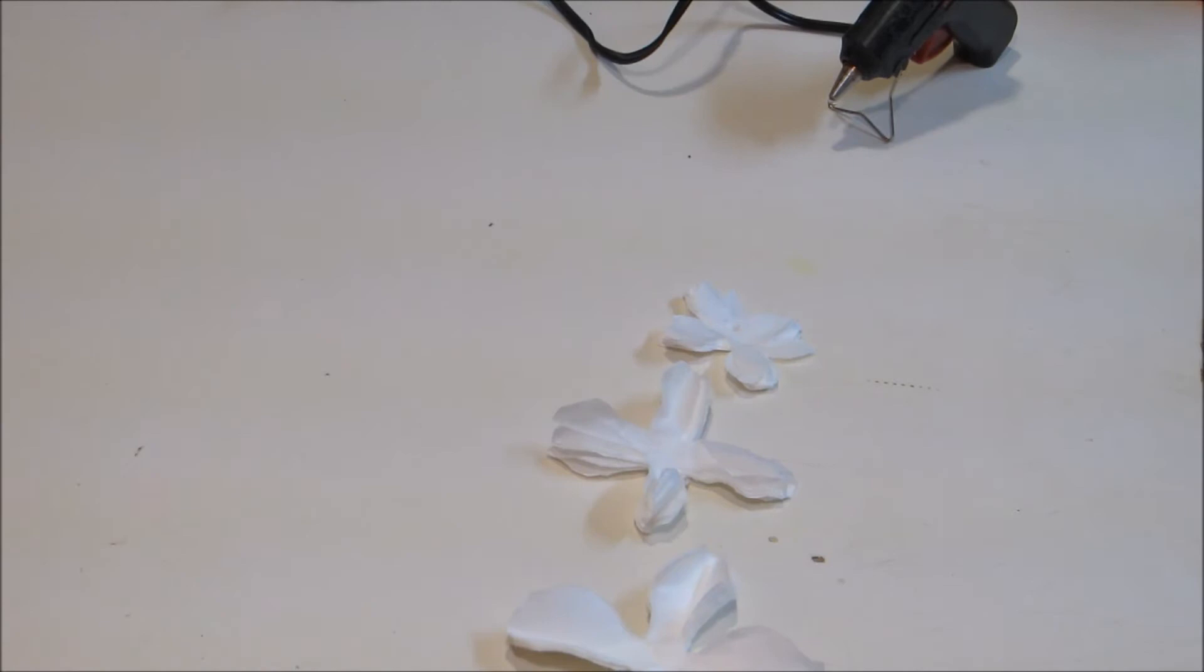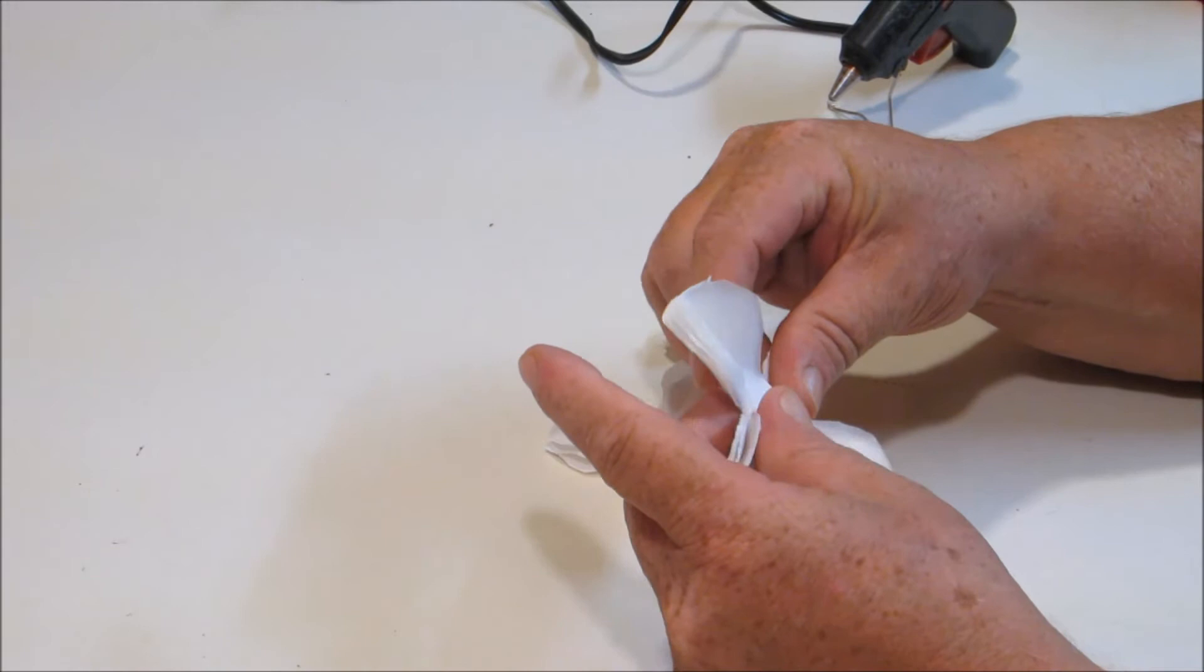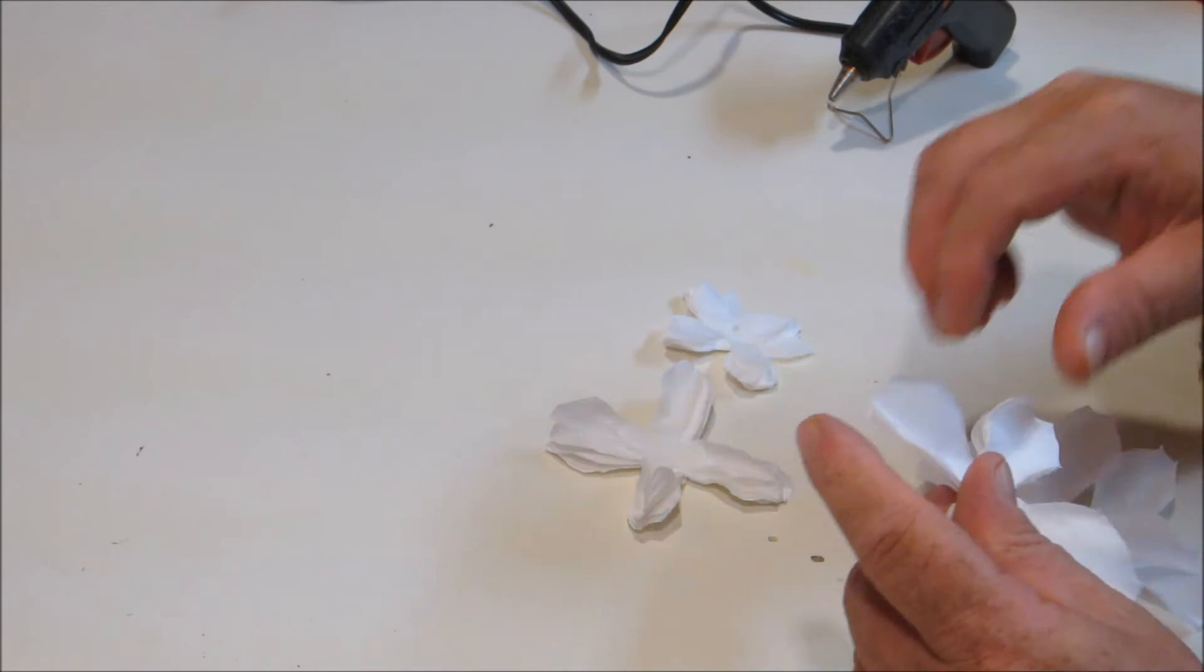All right, so now we got all three of these done, three different sizes, and they should look like this. If I get out of camera, you'll have to forgive me. So what you want to do is divide these in the twos, so you should have four stacks of two.